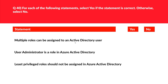This question is true-and-false based and related to Active Directory. Statement 1 — multiple roles can be assigned to an Active Directory user — seems true, since a manager can be part of both the development and operations team and have multiple roles, so we mark this as Yes. Statement 2 — user administrator is a role in Azure Active Directory — is true, as the user administrator role can manage all aspects of users and groups including resetting passwords for limited admins. Statement 3 — least privileged role should not be assigned in Azure Active Directory — is false. If a person needs access to one door, it's wise not to hand over keys to the entire house; that's the least privilege principle. The statement is written in reverse, so we mark it as false.